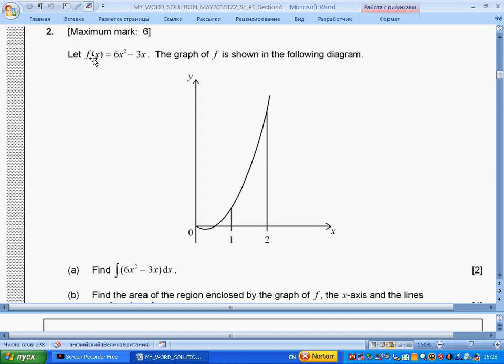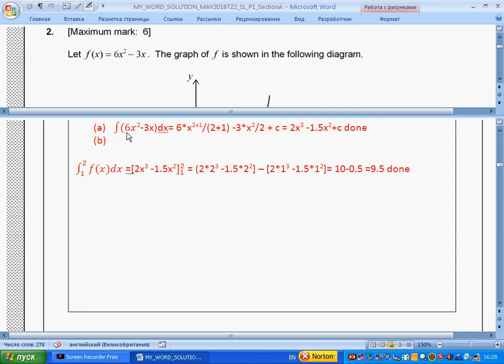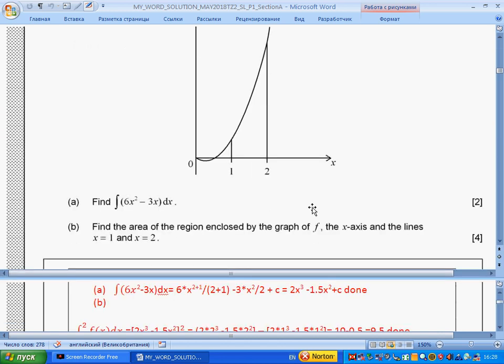We have a function f(x) = 6x² - 3x. Here we have the graph and we should find the indefinite integral of this function. We have two terms, so we should integrate each term separately. We get 6x³ divided by 3 minus 3x² divided by 2 plus C, which simplifies to 2x³ minus 3x²/2 plus C.